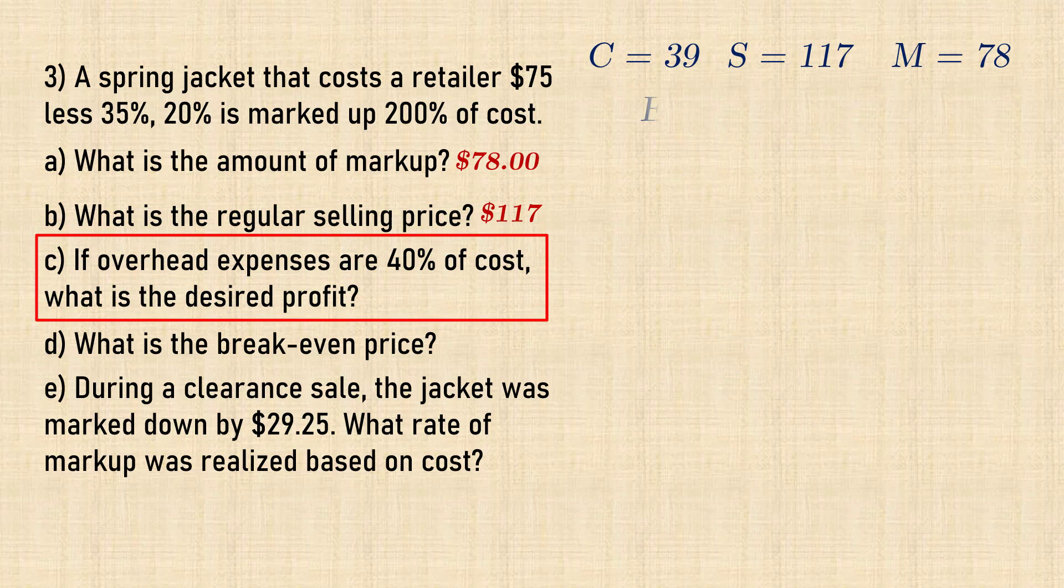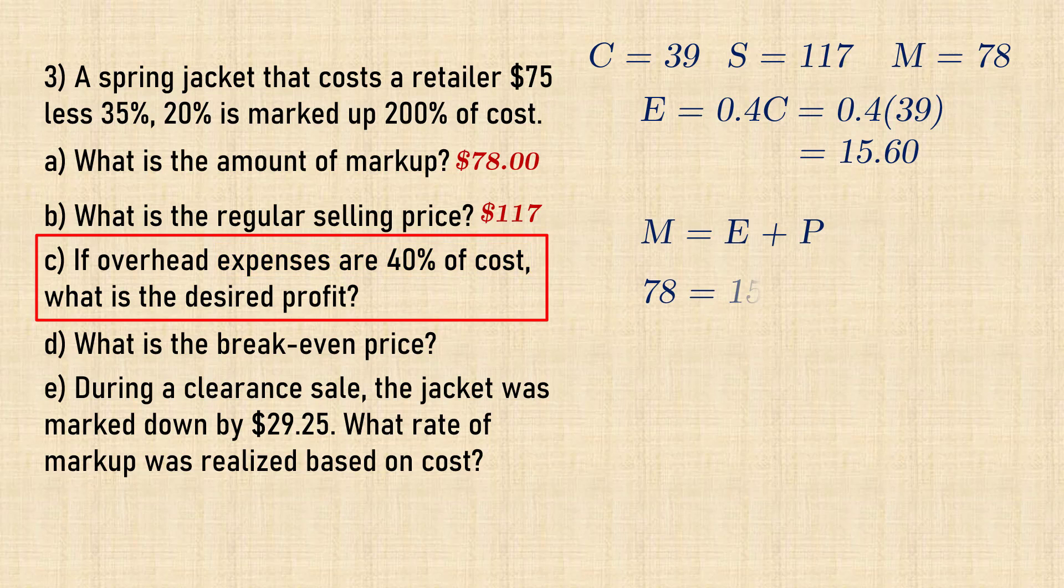In part C, if expenses are 40% of cost, then expenses are 0.4 times 39, which gives $15.60. Now markup equals expenses plus profit. That is, 78 equals 15.6 plus profit. In solving for profit, we have $62.40.